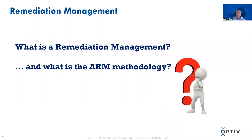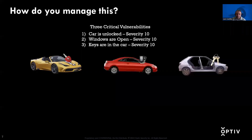Now we know what remediation is and what options exist. But what is remediation management, and what is the ARM methodology? In an analogy, we have three different assets, each with the same three critical vulnerabilities: cars unlocked, windows are open, and keys are in the car — all severity 10, existing on each of the three assets. So what do we do? How do we deploy resources, and where do we deploy resources first?